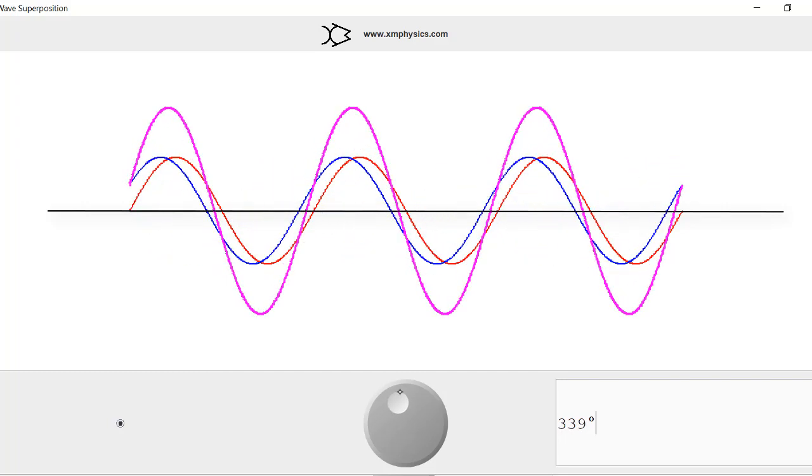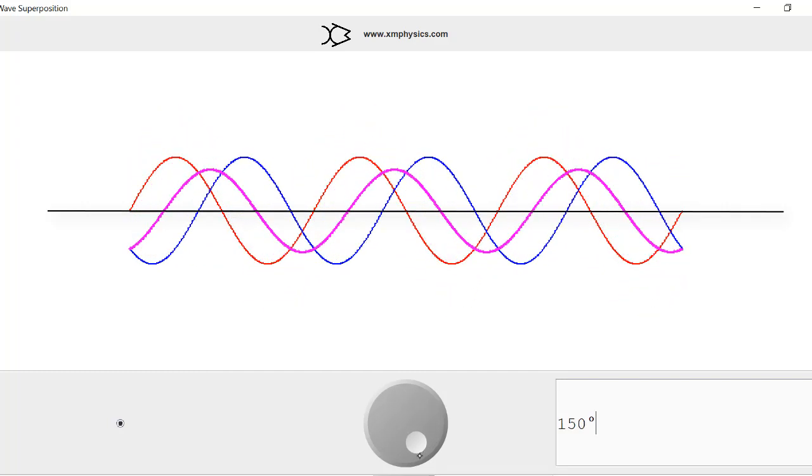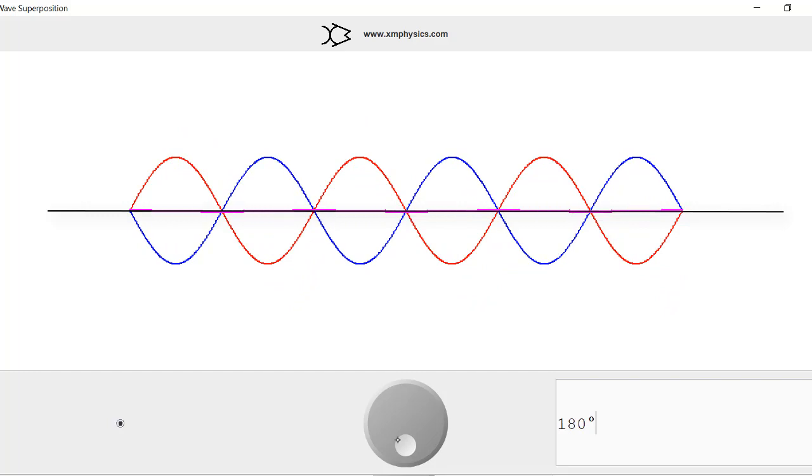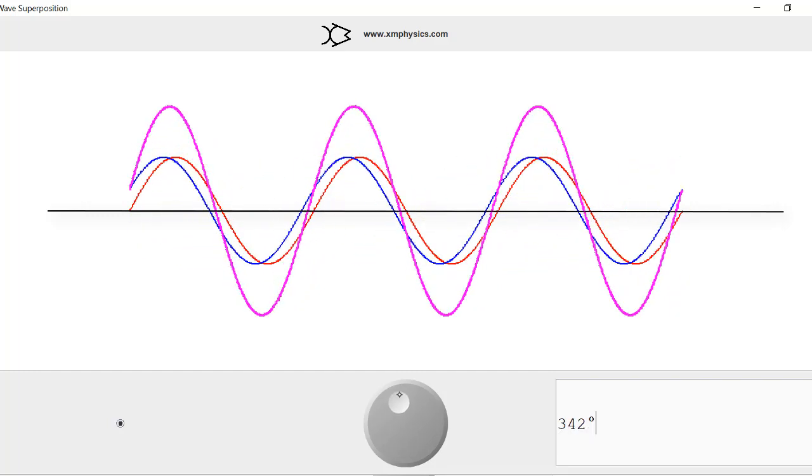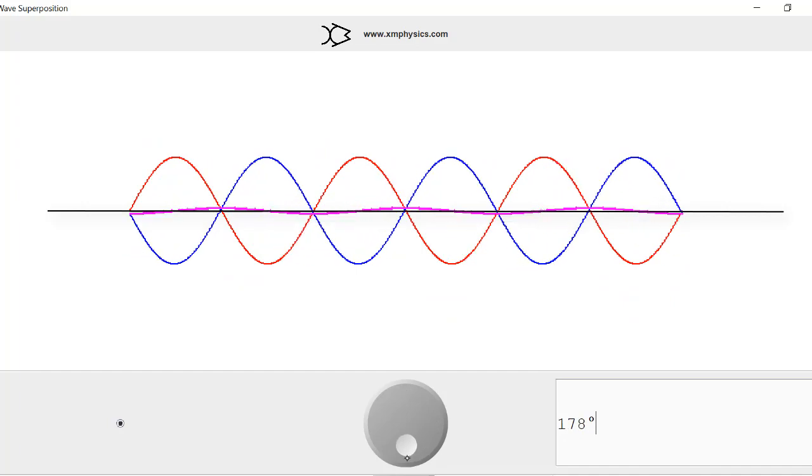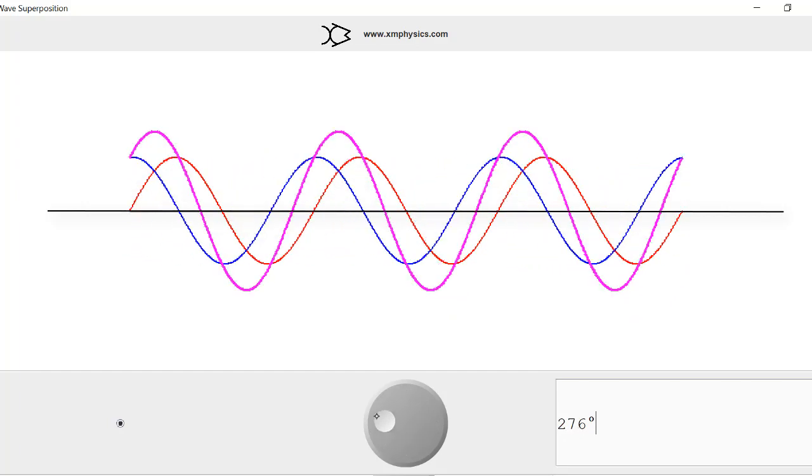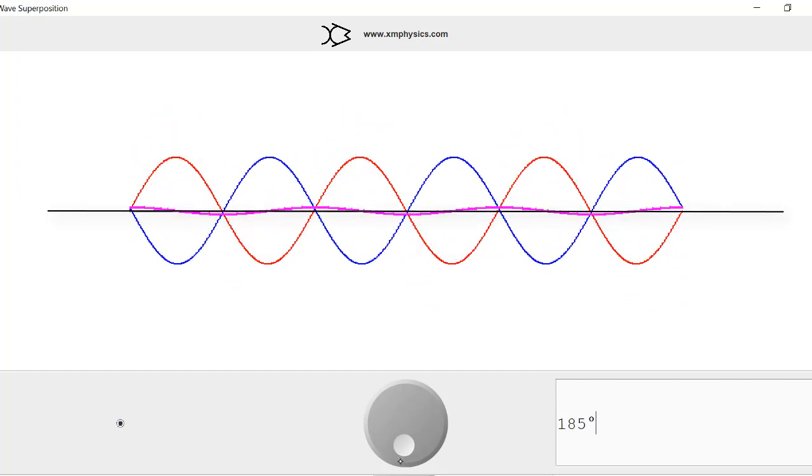The next time is when they are off by 2 and a half cycles, phase difference of 5π radians. The next time is 3 and a half cycles, 7π radians. 4 and a half cycles, 9π radians, and so on.